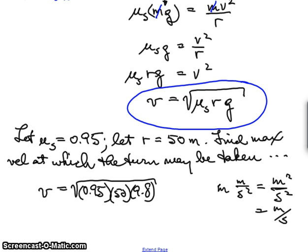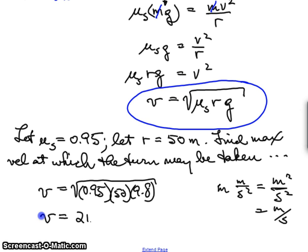Let's just see what this comes out to. I've got 0.95 times 50 times 9.8, that equals 465. We want the square root of that, so it's 21.57 meters per second. So v equals 21.6 meters per second.